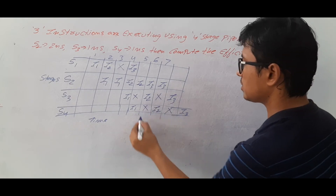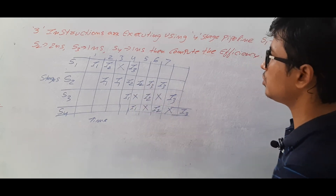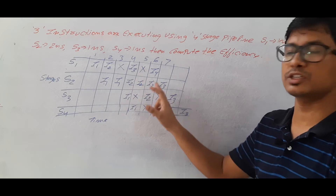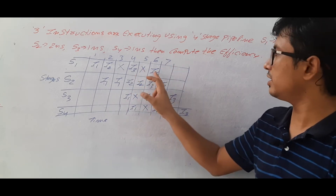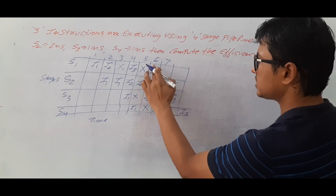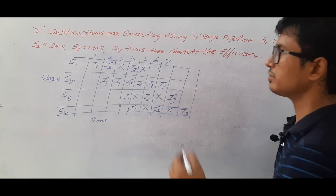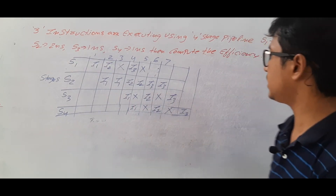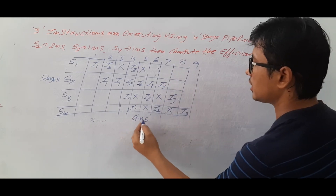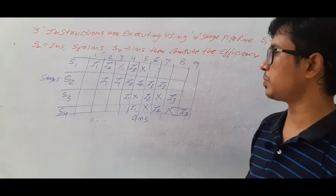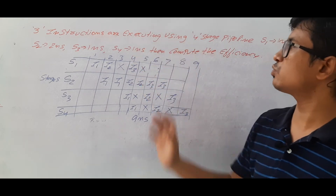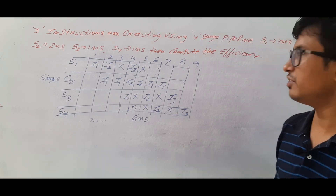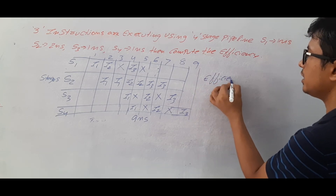These are all the stall cycles in the diagram. We only want to execute three instructions. The total time taken is nine nanoseconds to execute three instructions using the four-stage pipeline, where stage two takes two nanoseconds and stages one, three, and four each take one nanosecond.